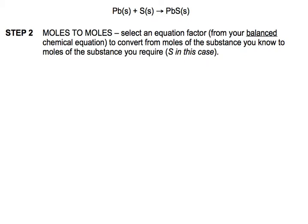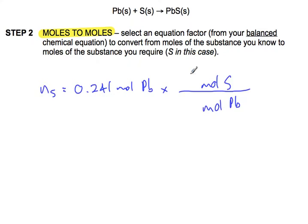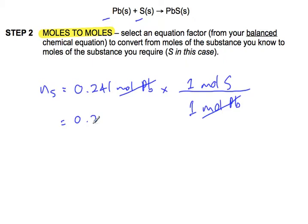This is where we need our equation. We're going to convert between moles of lead and moles of sulfur, our unknown. Moles of sulfur is what we're looking for. We're given 0.241 moles of lead, and we're going to multiply by the equation factor. We want to be left with moles of sulfur in the numerator, and moles of lead in the denominator. The coefficients are one and one — it's a one-to-one ratio — so that gives us 0.241 moles of sulfur.